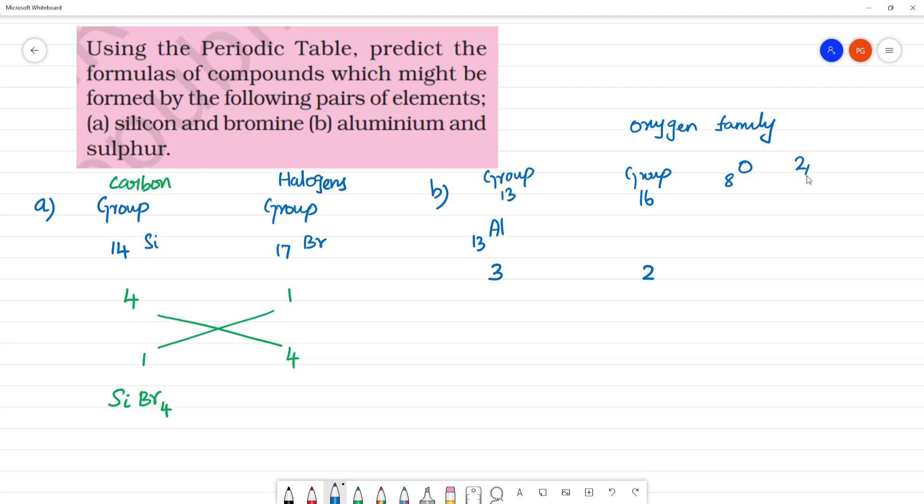Electronic configuration is 2, 6. So, this will need 2 electrons to attain the noble gas configuration, 2, 8. So, the valency is 2.